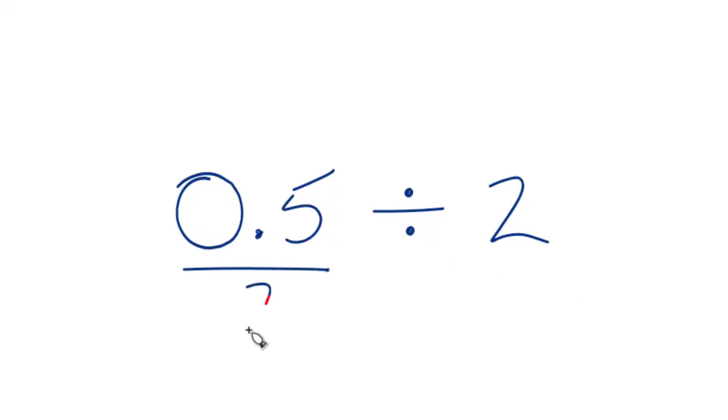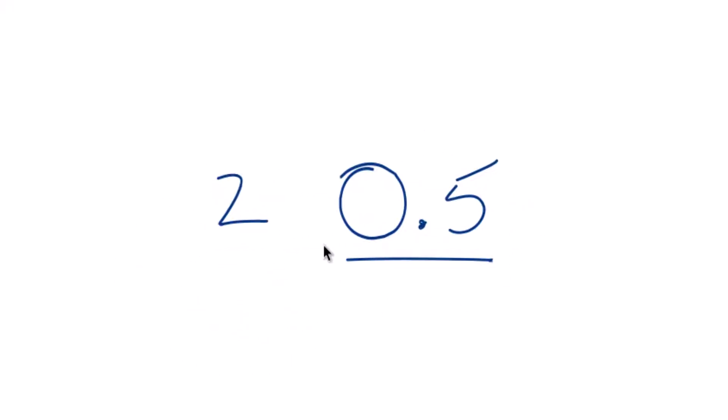We could write it like this here if we wanted. But really to figure this out, let's put 2 here and we're going to divide that into 0.5.